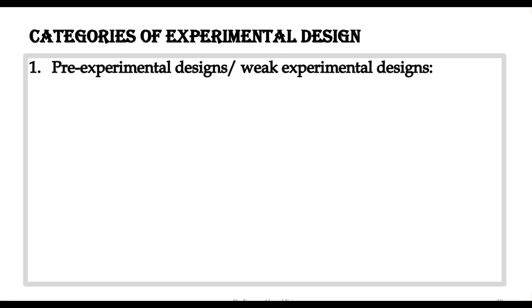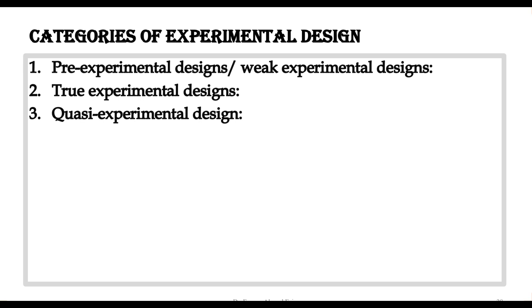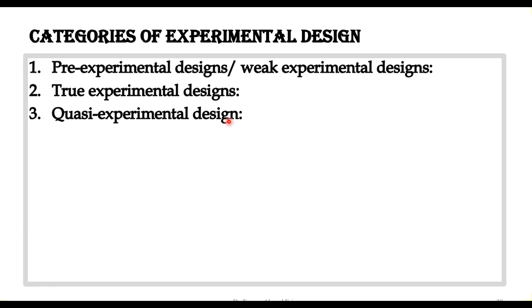What are the different categories of experimental designs? We will focus on three experimental designs. The first one is called pre-experimental design, also called weak experimental design. The second is true experimental design, and the third is quasi-experimental design.